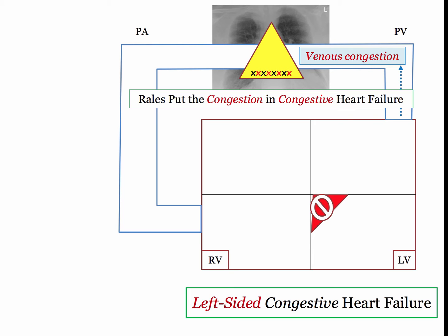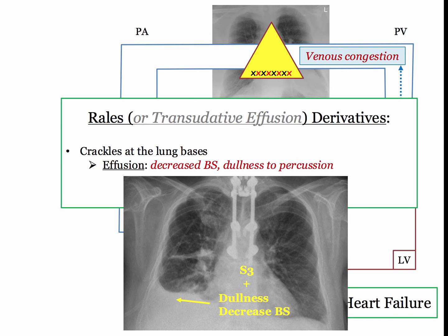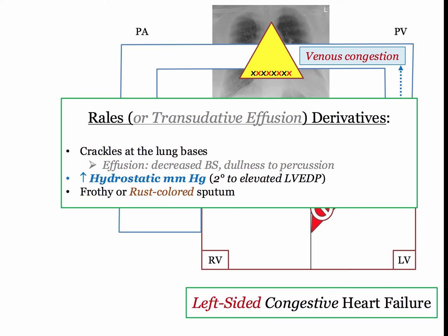Pulmonary venous congestion may also present with a transudated pleural effusion, manifest by decreased breath sounds and dullness to percussion. The combination of S3 plus this clinical description equals left-sided, not right-sided, heart failure. Turning to rales, the physiologic basis for fluid extravasation results from an increase in hydrostatic pressure, as expected when elevated left ventricular end diastolic pressure is transmitted back to the pulmonary circulation.